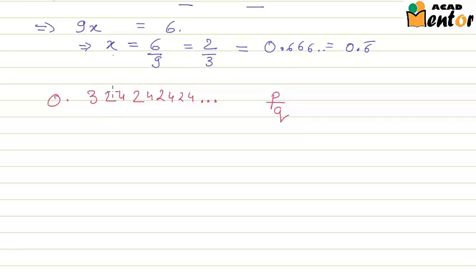You can see that 24 is repeated again and again. Hence, this can be represented as 0.324 and the bar on 24. Again let us assume x equal to 0.324 bar.